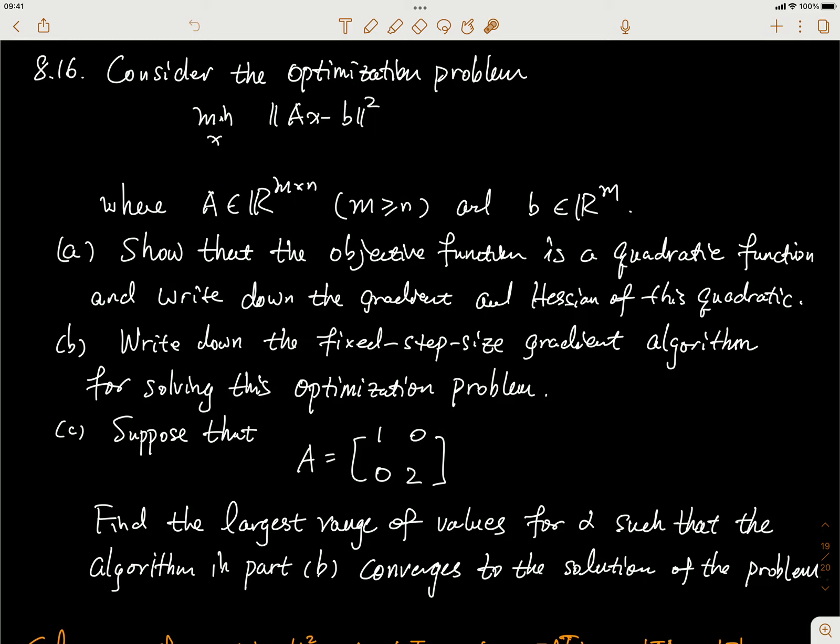The first question is to show that this objective function is actually a quadratic function of x and write down the gradient and Hessian of this quadratic.